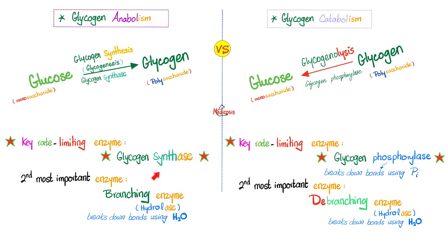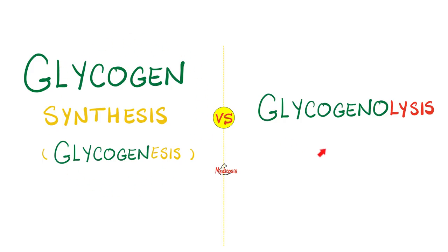The second most important enzyme in glycogen build-up is the branching enzyme — it adds branches. In glycogen breakdown, it's the de-branching enzyme. The de-branching enzyme has hydrolase activity because breaking down a bond in the presence of water is hydrolysis. This is the feeding state versus the fasting state — the land of insulin versus the land of glucagon, anabolism versus catabolism.